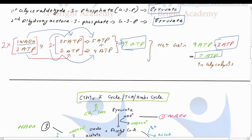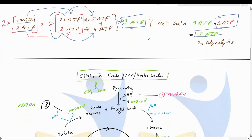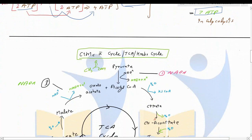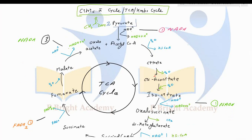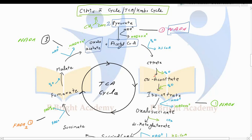The pyruvate formed in glycolysis moves on to the next cycle — the TCA cycle, also called the citric acid cycle or Krebs cycle. Two molecules of pyruvate enter this cycle and undergo different changes. We will first understand that when pyruvate forms acetyl coenzyme A, there is a formation of NADH. It then moves into the TCA cycle where oxaloacetate combines with acetyl coenzyme A and the cycle proceeds.